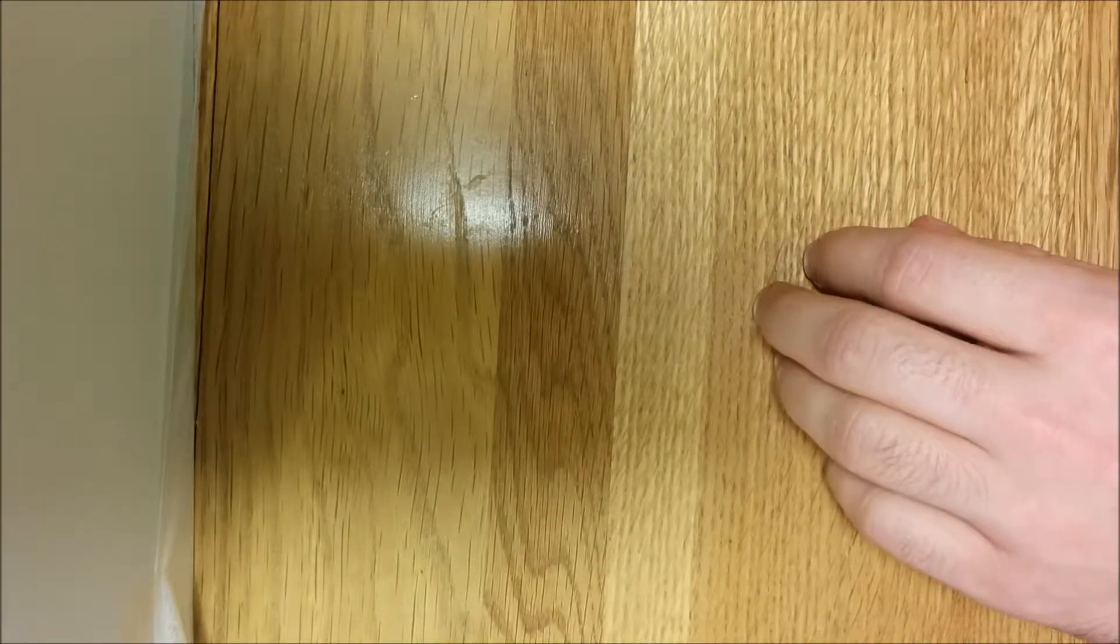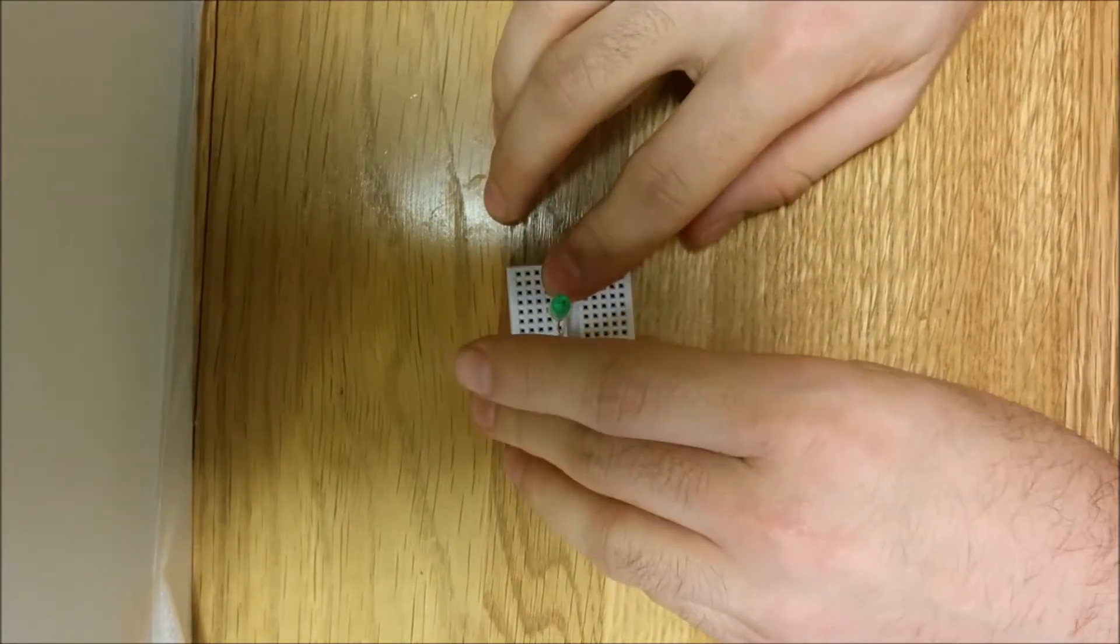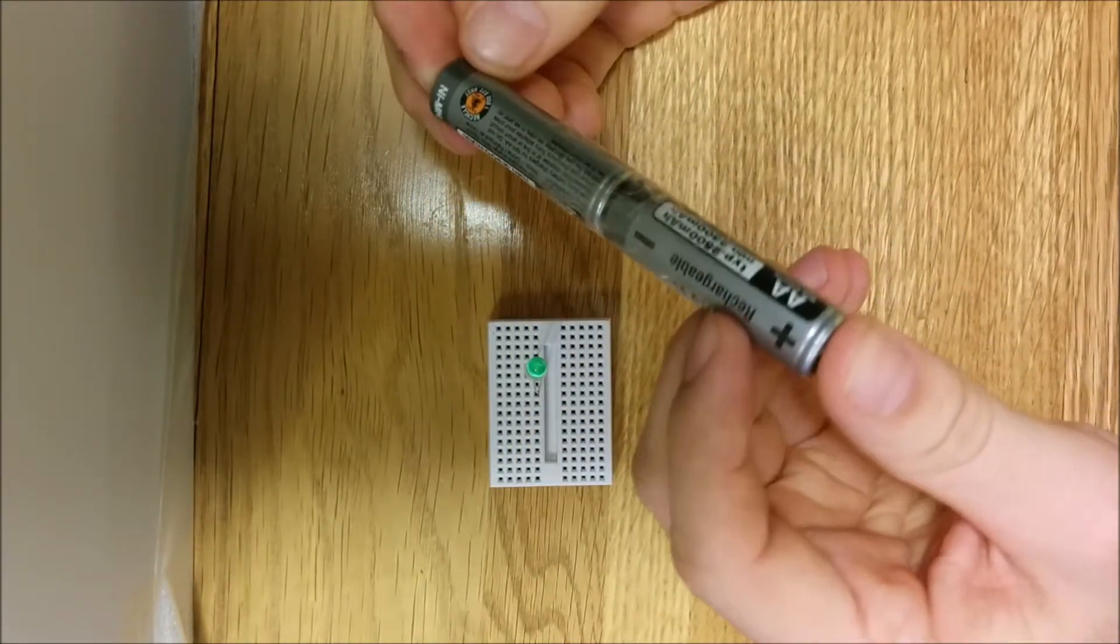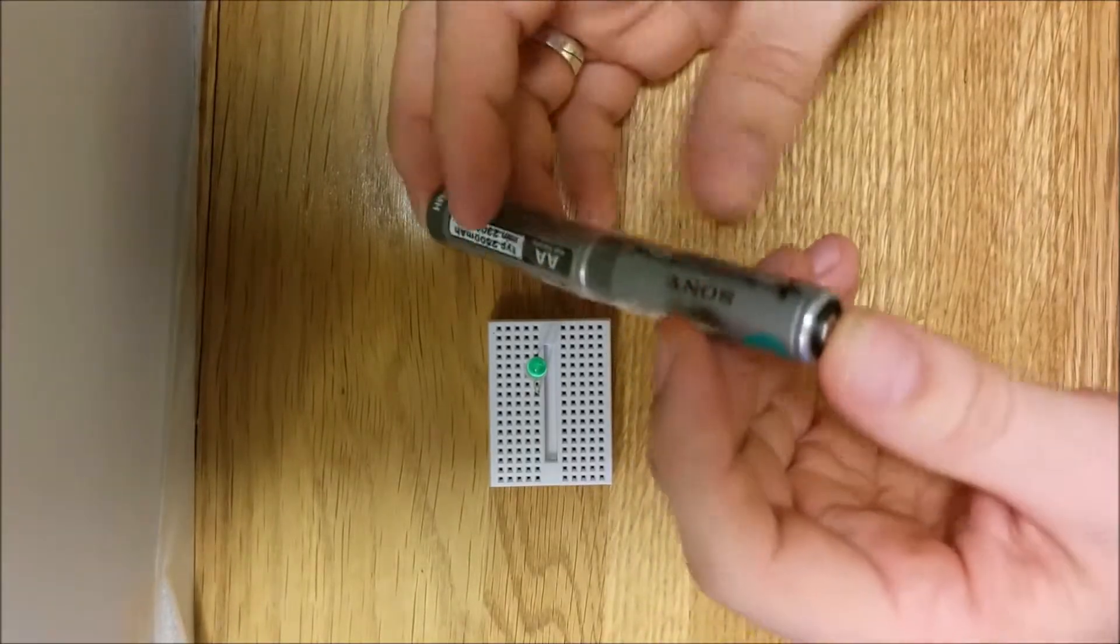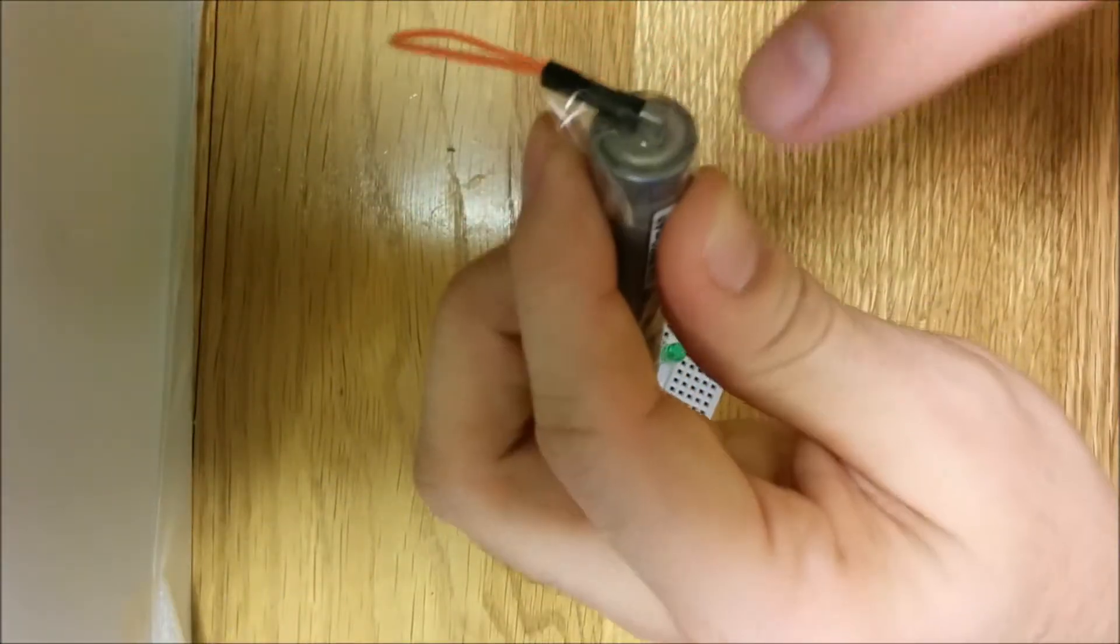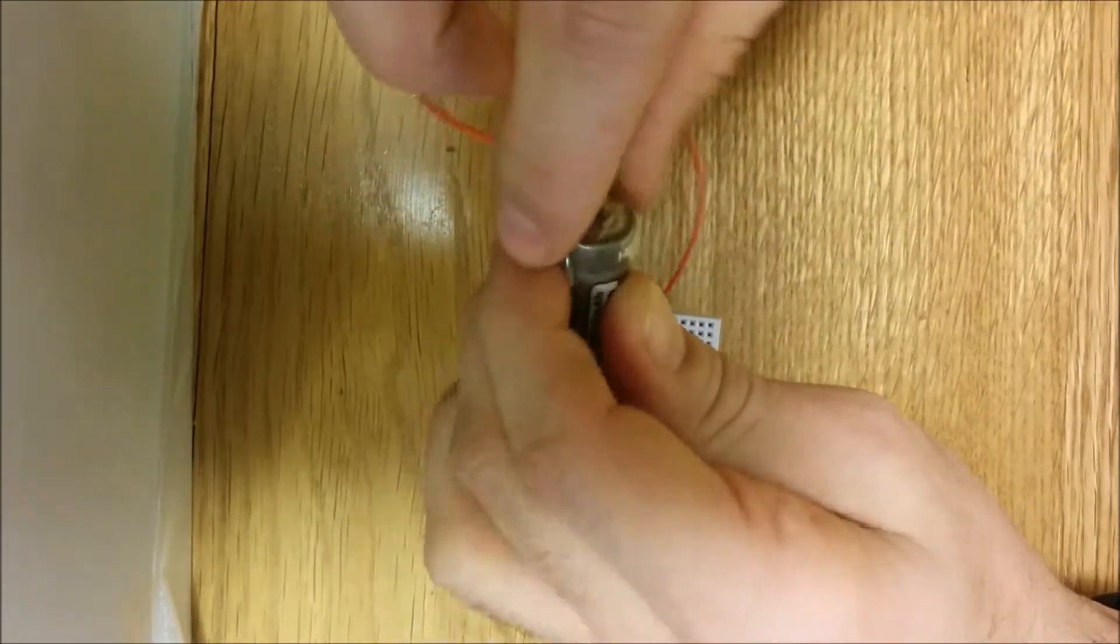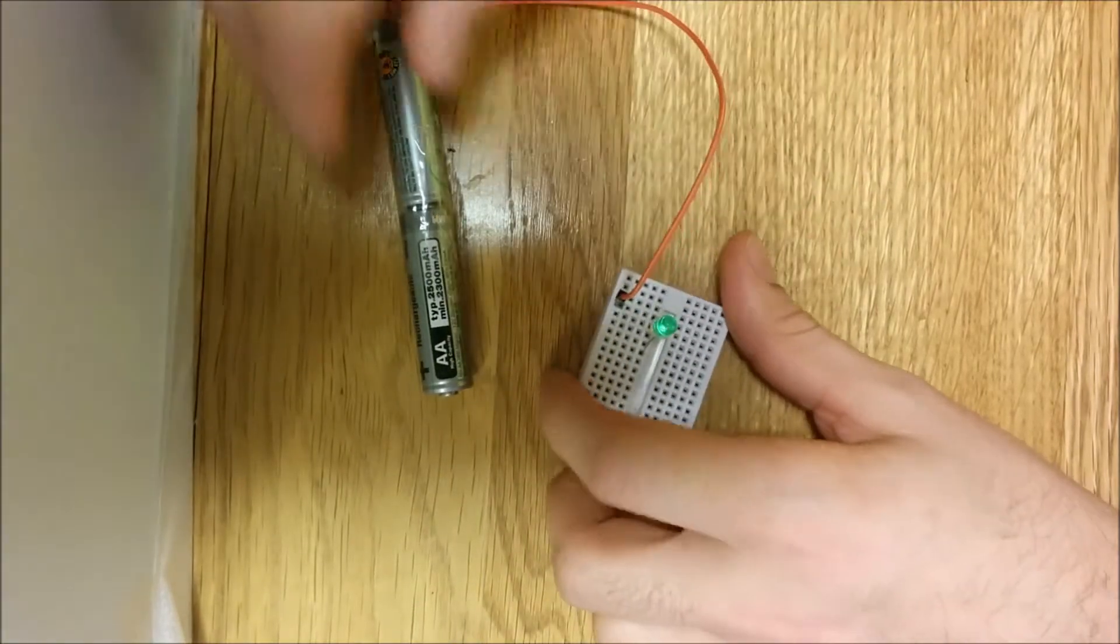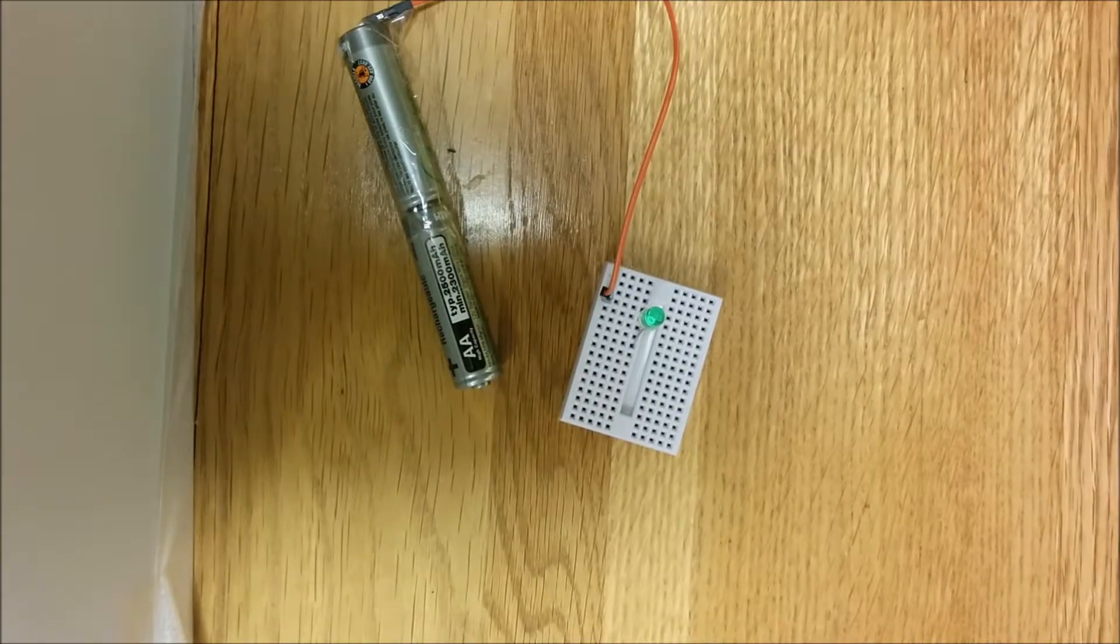Now we connect the negative side of LED, the cathode, to the negative side of the battery. I use two batteries because it makes the brightest lights. Make sure that the wire touches the battery, because the lights don't turn on if you don't connect the right way.